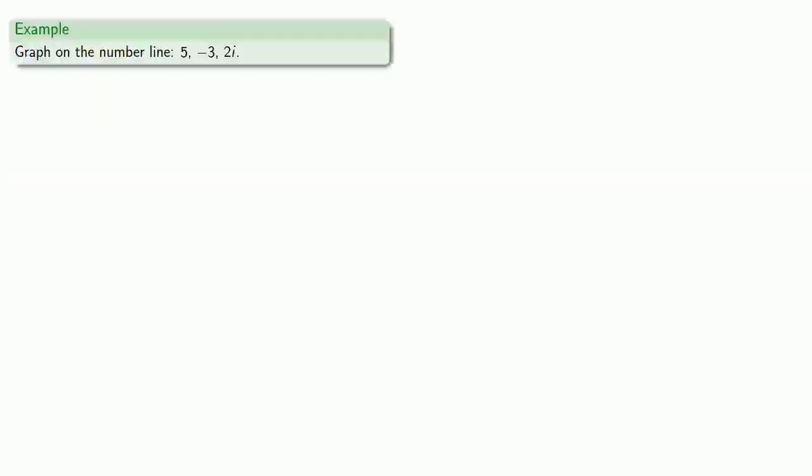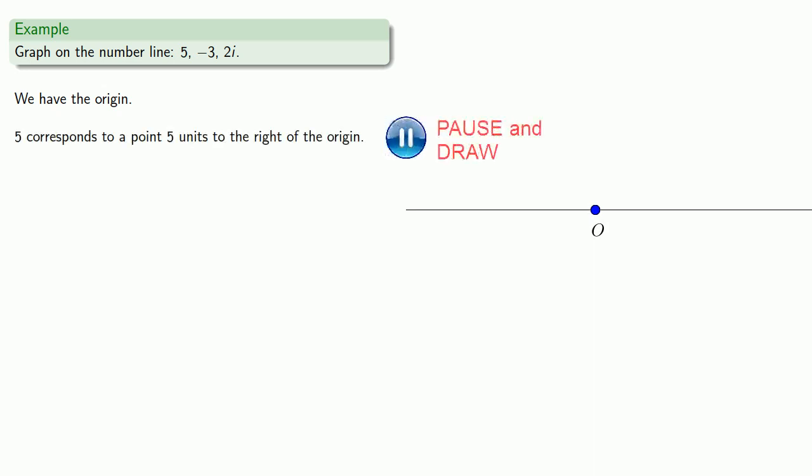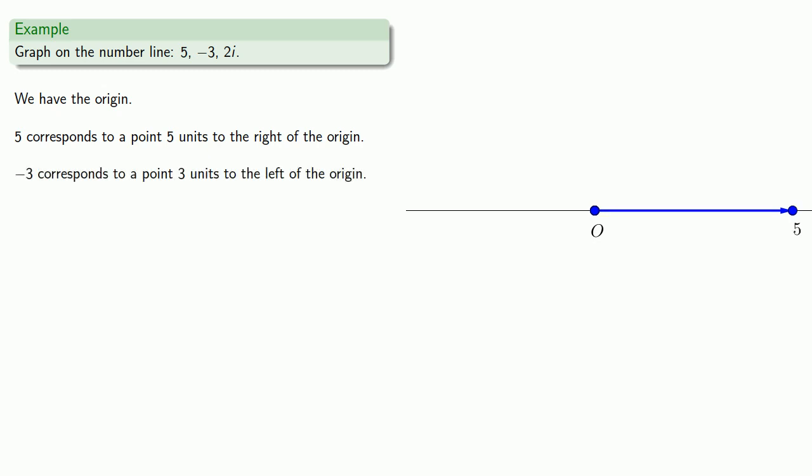For example, let's consider the graph on the number line: 5, negative 3, and 2i. Remember when we graph on the number line, we're really graphing the distance from the origin. So we'll put down our origin, and if it's not written down, it didn't happen, we should label. 5 corresponds to 0.5 units to the right of the origin. Since the distance from the origin is what's actually important, let's indicate that length and label. Minus 3 corresponds to 0.3 units to the left of the origin. And again, we'll mark out the distance and label the point.